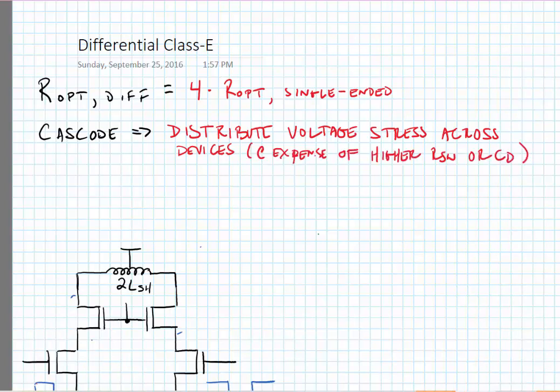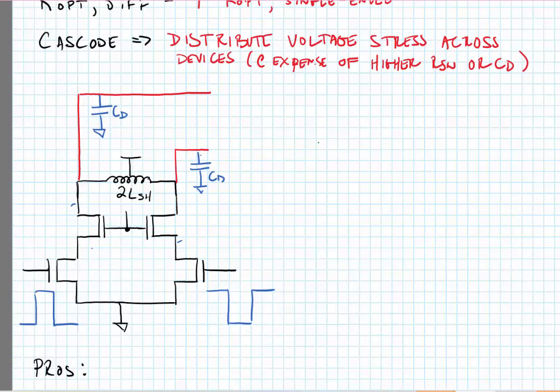Now one thing to remember about the Class E network is that we may be able to absorb the drain parasitic into our network. Now here I've drawn the drain parasitic, and we know that we might implement the shunt susceptance just by making a differential capacitor across the differential output. This differential capacitor will have a value of B_opt from our earlier calculation divided by two. Now we're further going to have a differential Class E network.